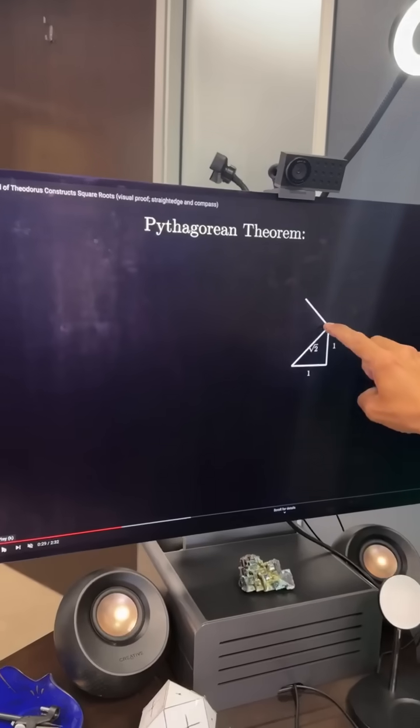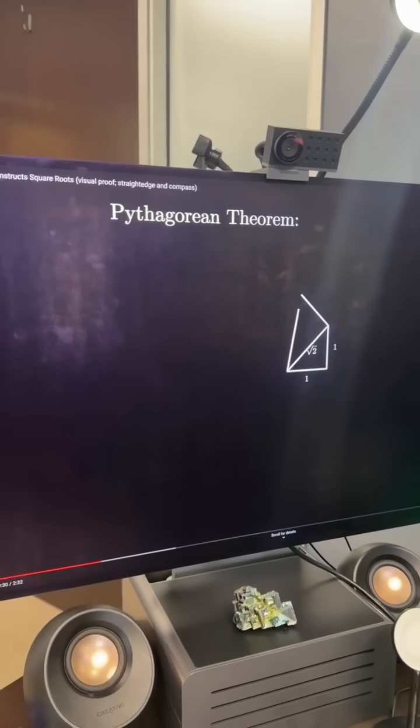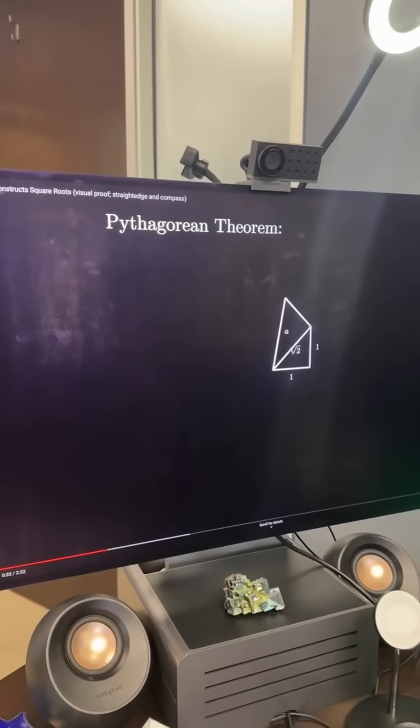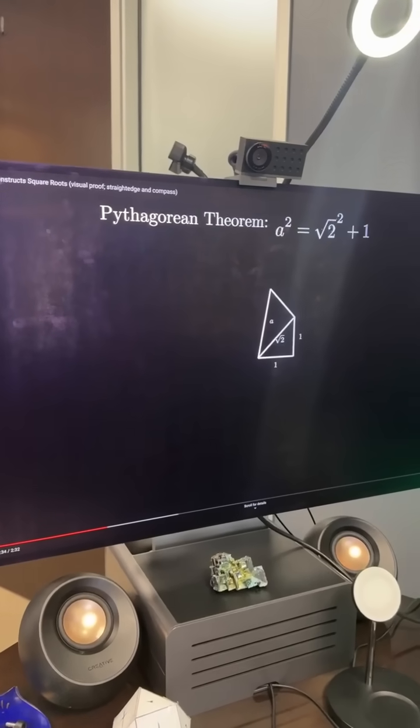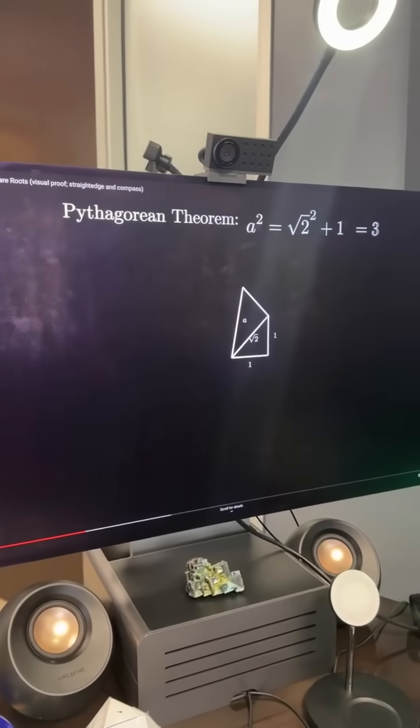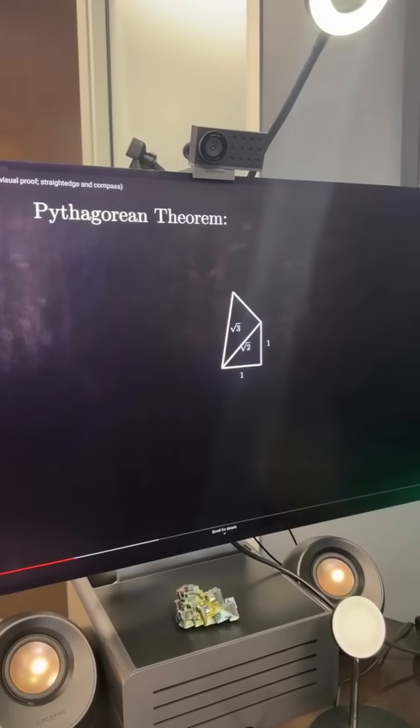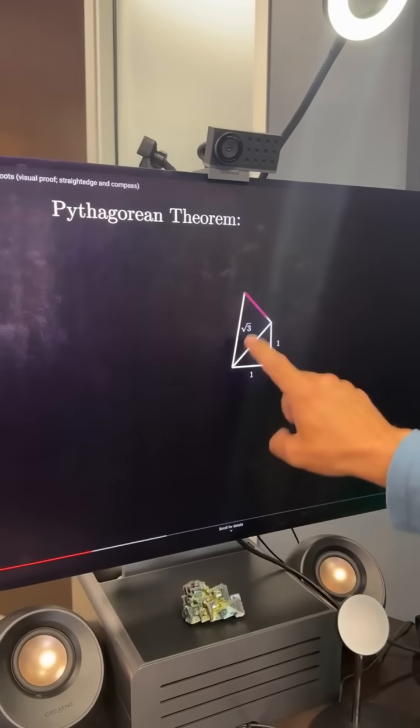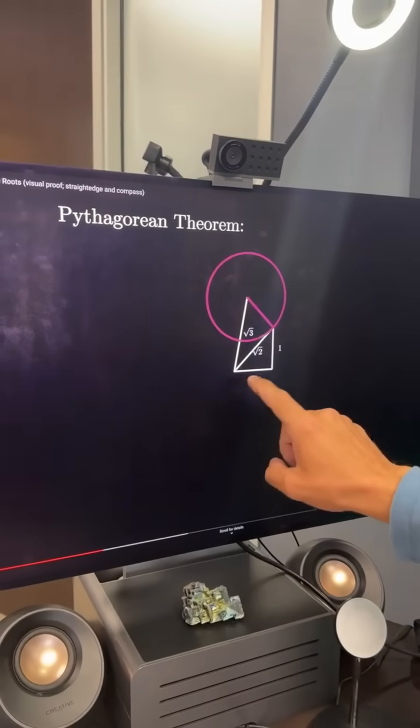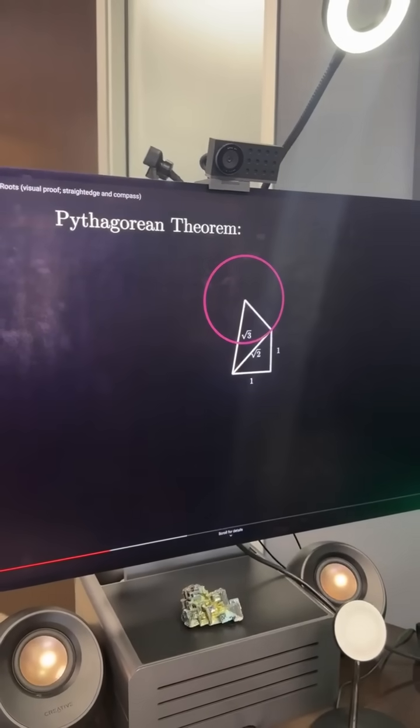And what we get here is a squared equals the square root of 2 squared plus 1 squared equals 3. So the length of this line is 1.732. The length of this line is 1.